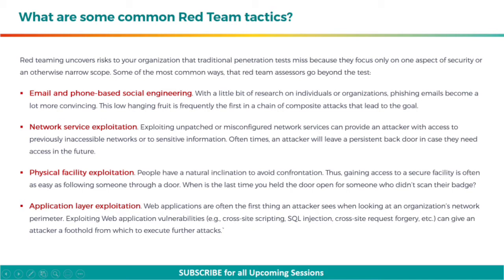Next, physical facility exploitation. People have a natural inclination to avoid confrontation. Thus, gaining access to a secure facility is often as easy as following someone through a door. When is the last time you held the door open for someone who didn't scan their badge? Next, application layer exploitation. Web applications are often the first thing an attacker sees when looking at an organization's network perimeter. Exploiting web application vulnerabilities — for example, cross-site scripting, SQL injection, cross-site request forgery, etc. — can give an attacker a foothold from which to execute further attacks.